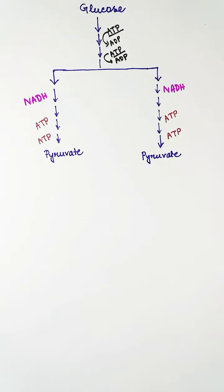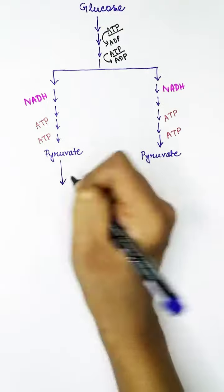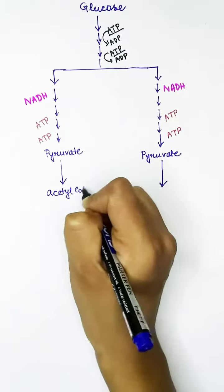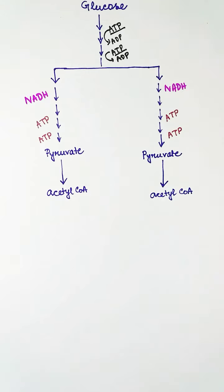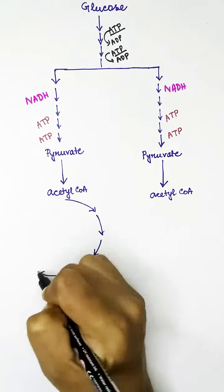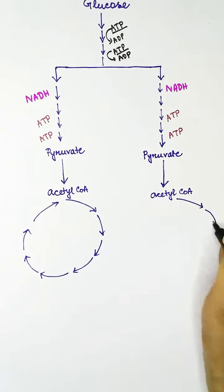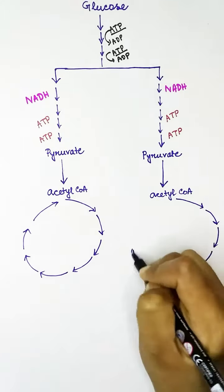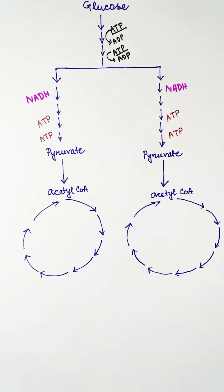And two NADH molecules are produced which will make ATP in electron transport chain. Next, pyruvate will be converted to acetyl-CoA, and acetyl-CoA will participate in Krebs cycle. So from one glucose we'll get two Krebs cycles.